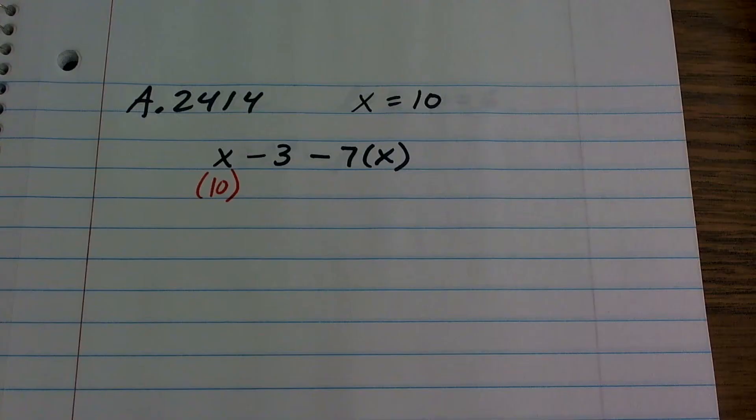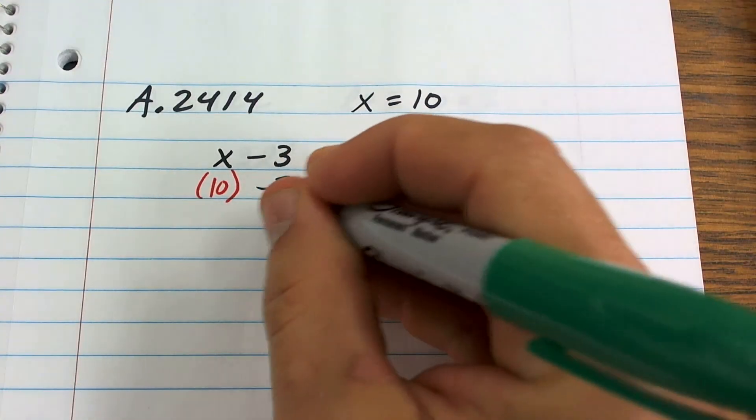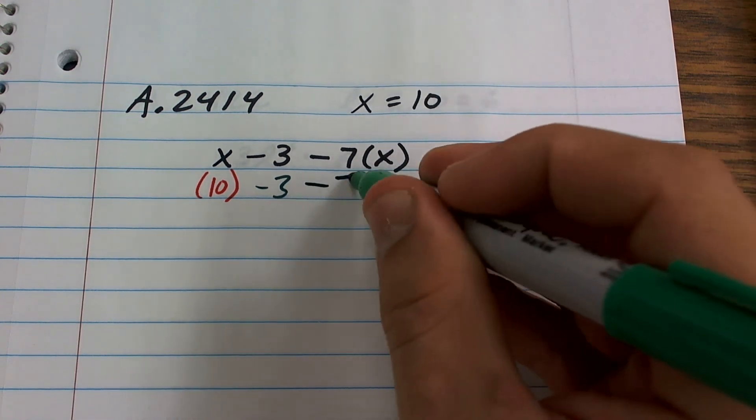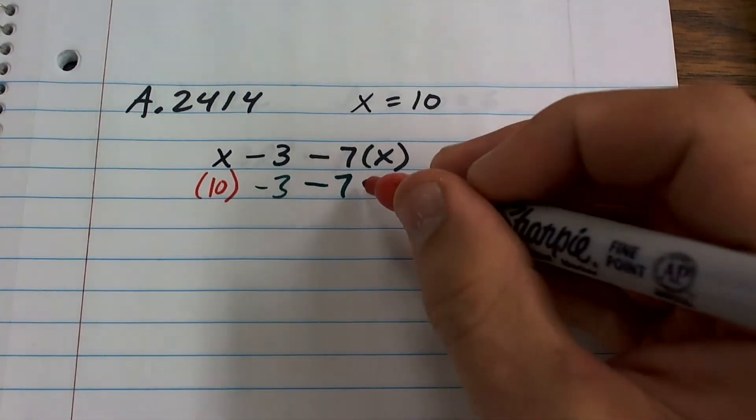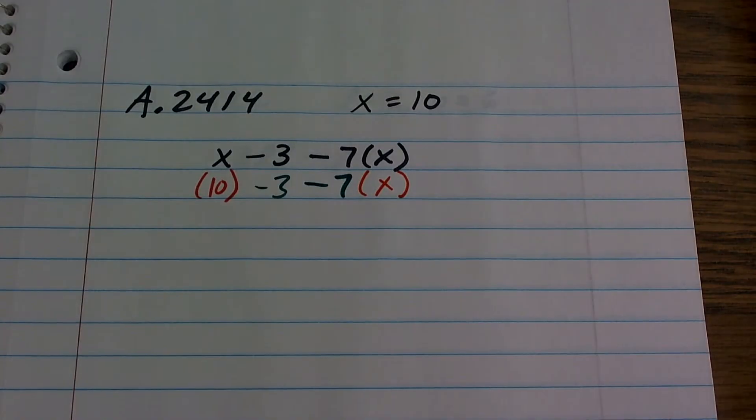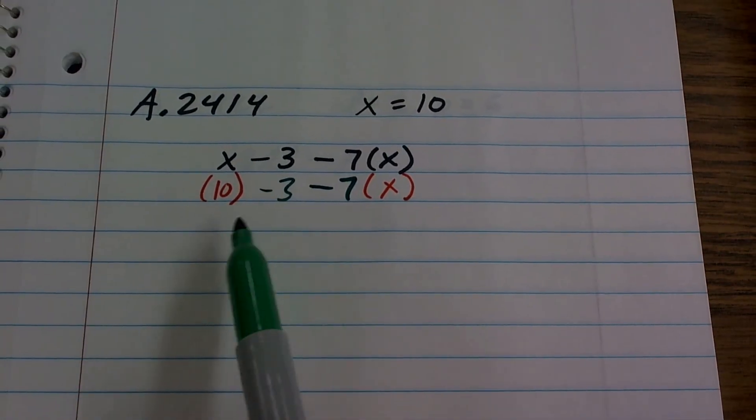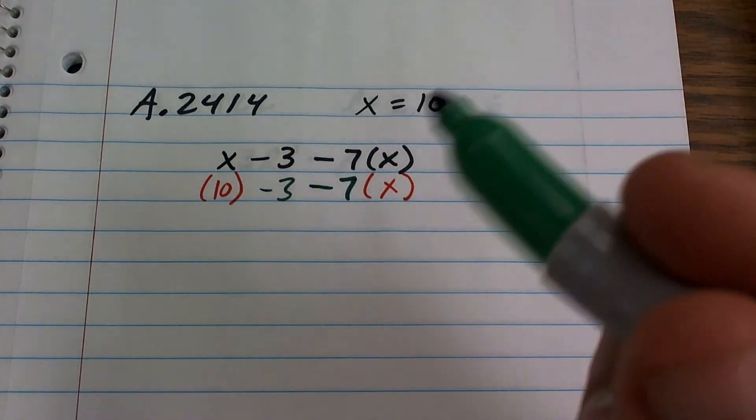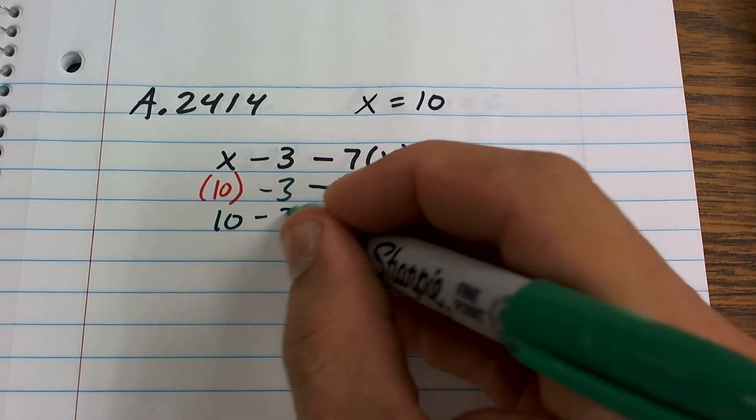So when I plug in a number, I like to put it in parentheses. Therefore, if anything happens, especially like multiplication, I know that I'm going to be multiplying by my x. So here what I have now is, here I have 10 in parentheses minus 3. Well, I don't need to continue that, so I can just rewrite that without the parentheses.